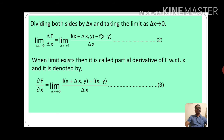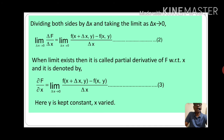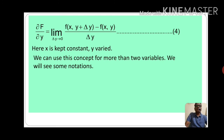When the limit exists, it is called the partial derivative of f with respect to x, and it is denoted by del f by del x is equal to limit delta x tends to 0 of f of x plus delta x comma y minus f of x and y upon delta x — this is equation three. Here y is kept constant and x is varied. Similarly, del f by del y is equal to limit delta y tends to 0 of f of x comma y plus delta y minus f of x and y upon delta y — equation four. Here x is kept constant and y is varied.